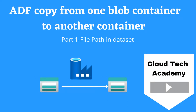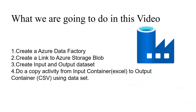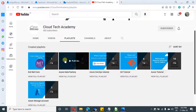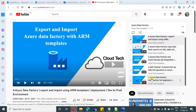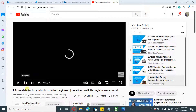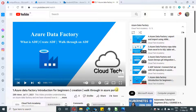Hello everyone. In this video, I'm going to show how to copy an Excel file from one container to another container using file path in the dataset. We are going to create Azure Data Factory first, then create a linked service to Azure Blob Storage, and then create input and output datasets. After that, we will use copy activity to copy the file from the input container to the output container. We have already covered the basics of datasets and linked services in our first video — just navigate to our Data Factory playlist and watch that first video.